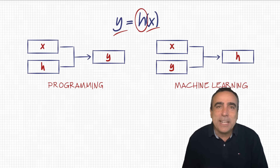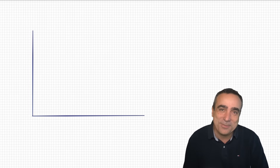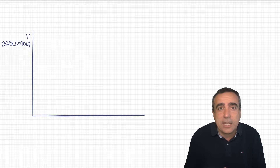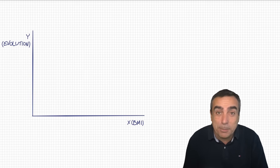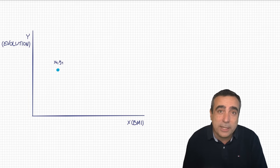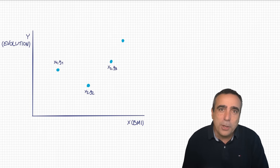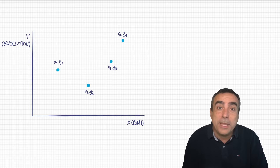Let's see an example. Imagine you have values from research on patients with diabetes — this is actually a real dataset often used as the hello world of machine learning. On the y-axis, you have a number representing the evolution of a patient with diabetes after one year. On the x-axis, you have some attribute of the patient, for example the body mass index, the BMI. With a few patients — patient 1 with values x1 and y1, patient 2 with x2, y2, patient 3 and patient 4 — the goal is to find a function h that can predict the evolution of a new patient with a new BMI value not seen before.